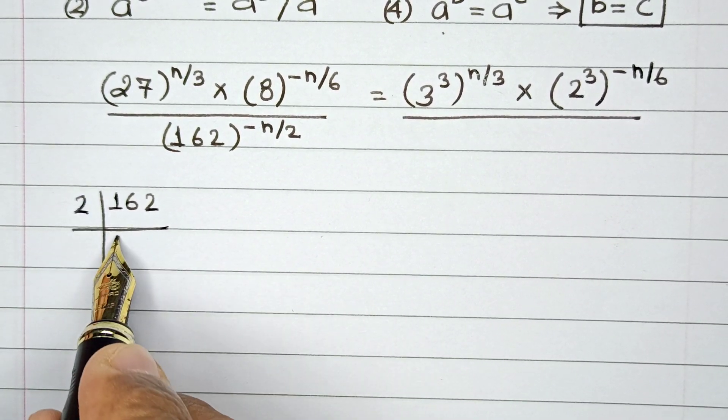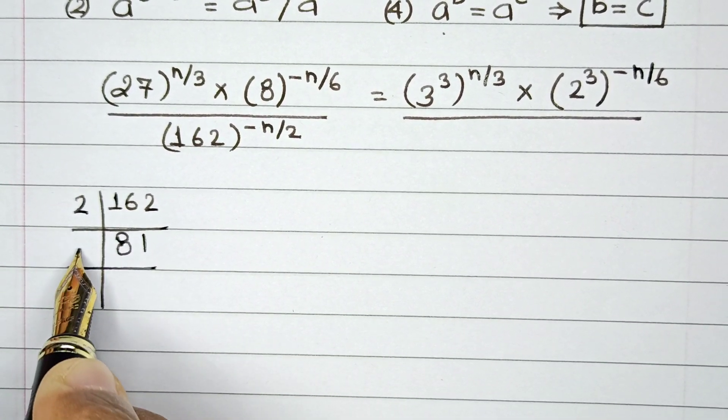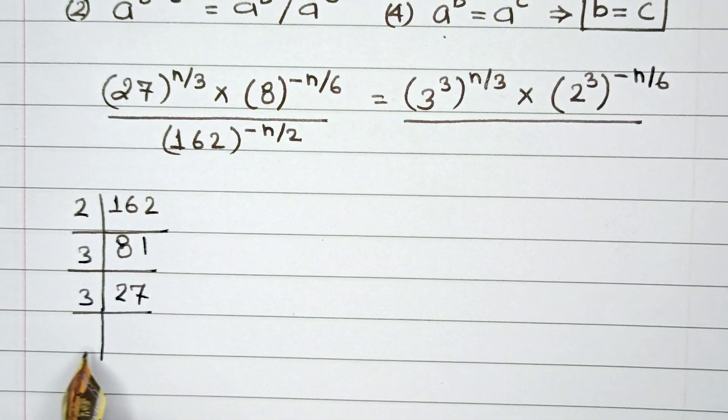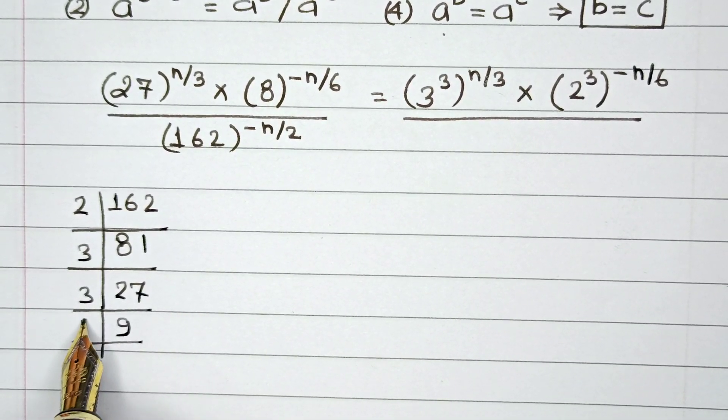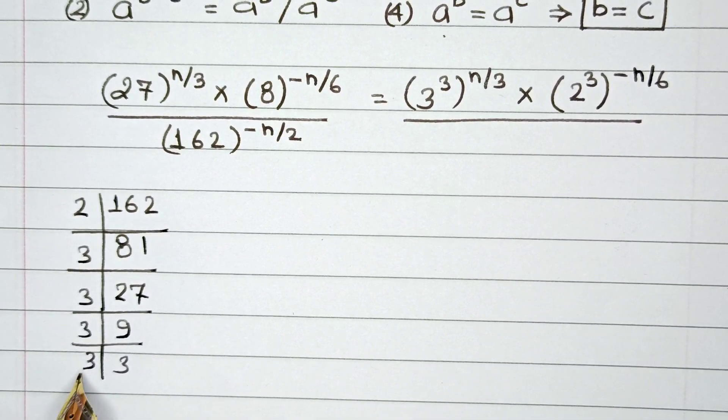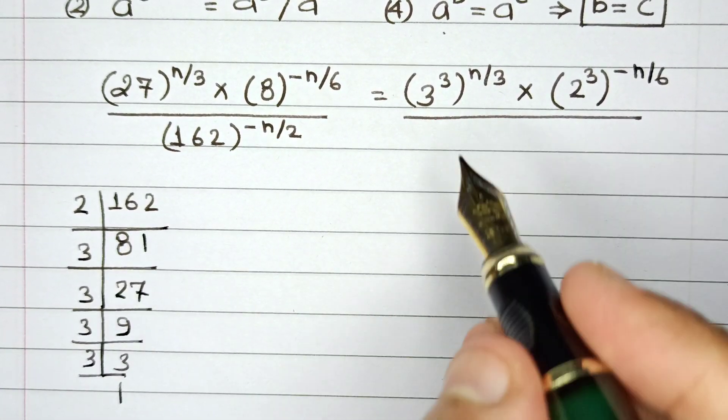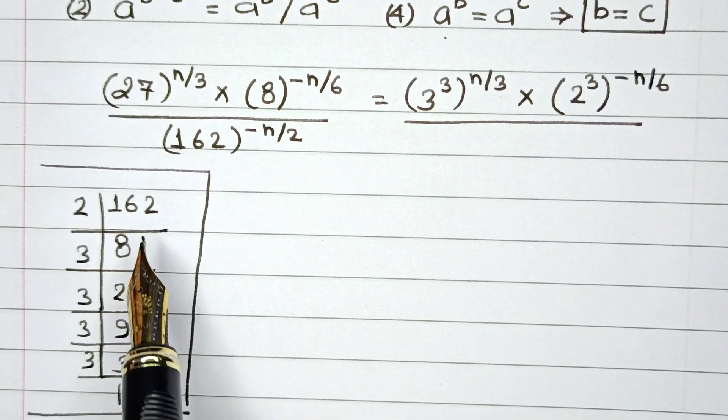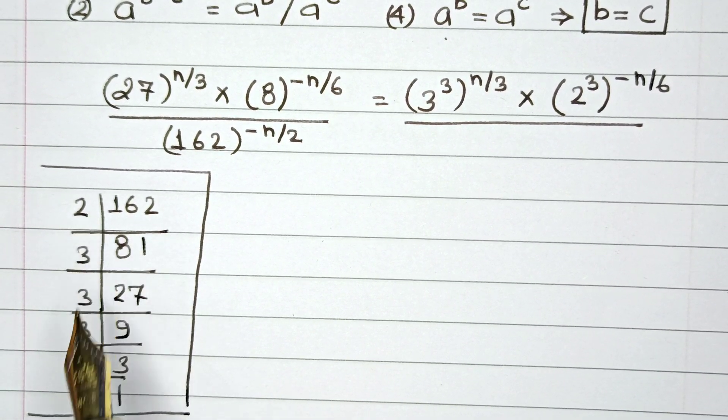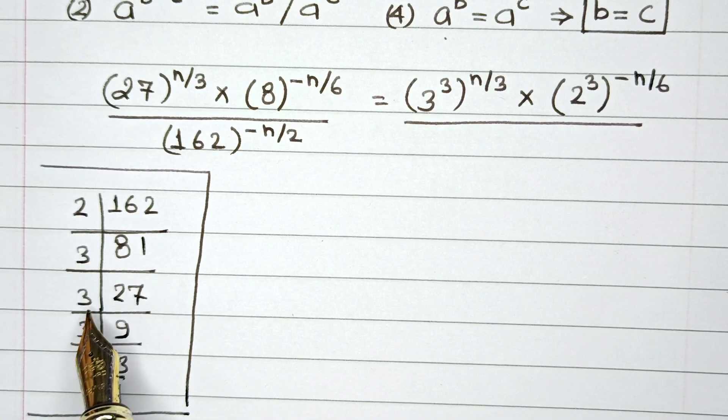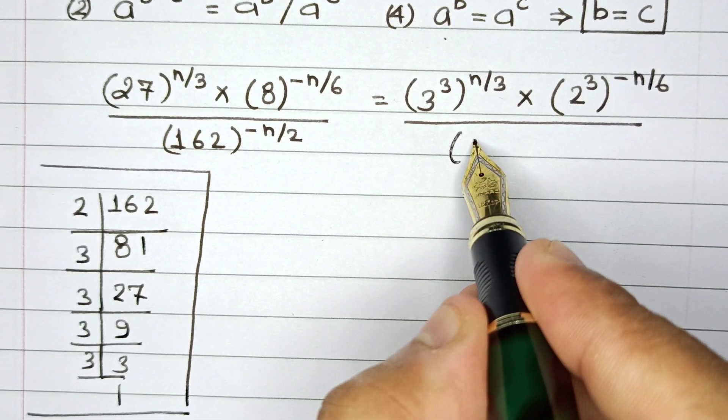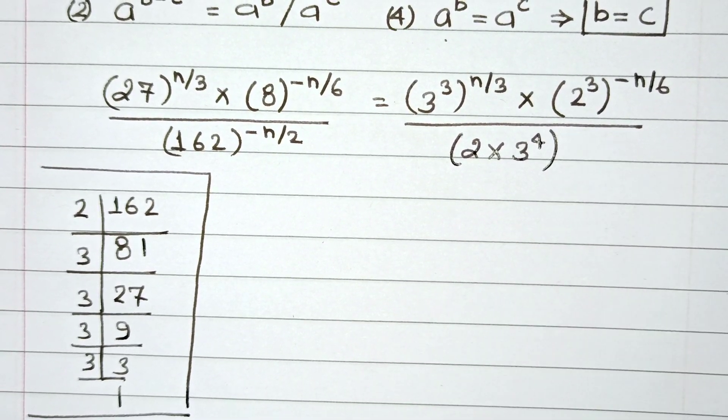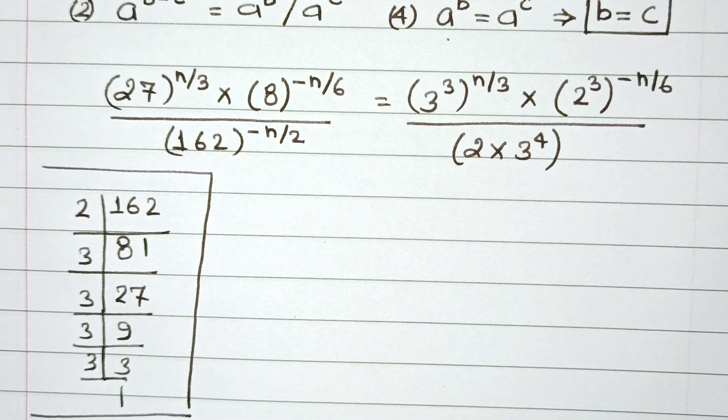So this would be 2 times 81, this would be 3 times 27, and then this would be 3 times 9 and 3 times 3. So basically 162 can be written, if you put this inside a bracket as part of rough work, so 162 can be written as 2 multiplied by 3 raised to the power 1, 2, 3, 4...